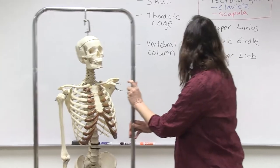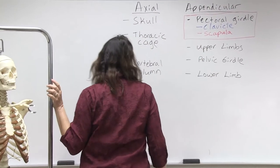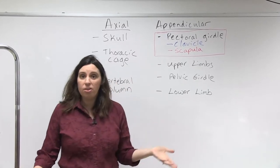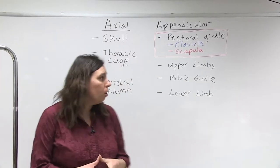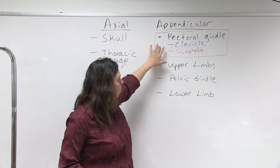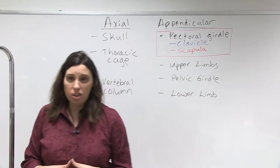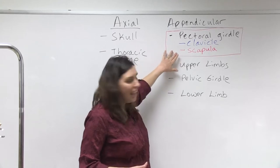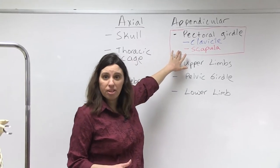Now, the appendicular skeletal system is going to really consist of four major parts, and of course there are several bones in each of the parts. The pectoral girdle, which is basically the chest girdle, is going to consist of two bones: the clavicle and the scapula, and that's going to be our major focus today.